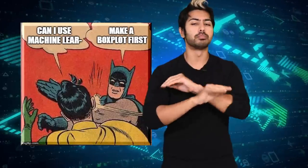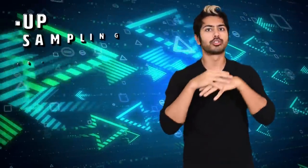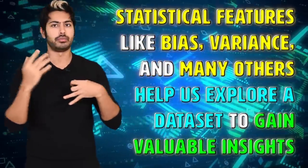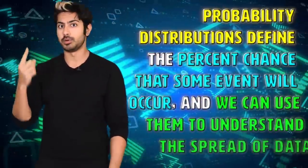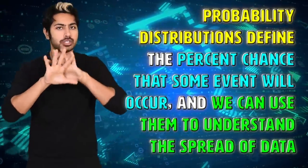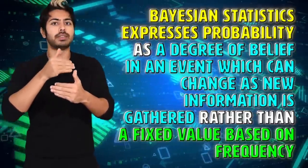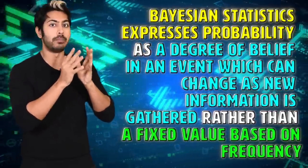As you can see, statistics is supremely useful in data science, and we only covered three key concepts. There are many more, like upsampling, downsampling, and dimensionality reduction. But here are the three things to remember: statistical features like bias, variance, and others help us explore a dataset to gain valuable insights; probability distributions define the percent chance that some event will occur and help us understand the spread of data; and Bayesian statistics expresses probability as a degree of belief in an event that can change as new information is gathered, rather than a fixed frequency-based value.